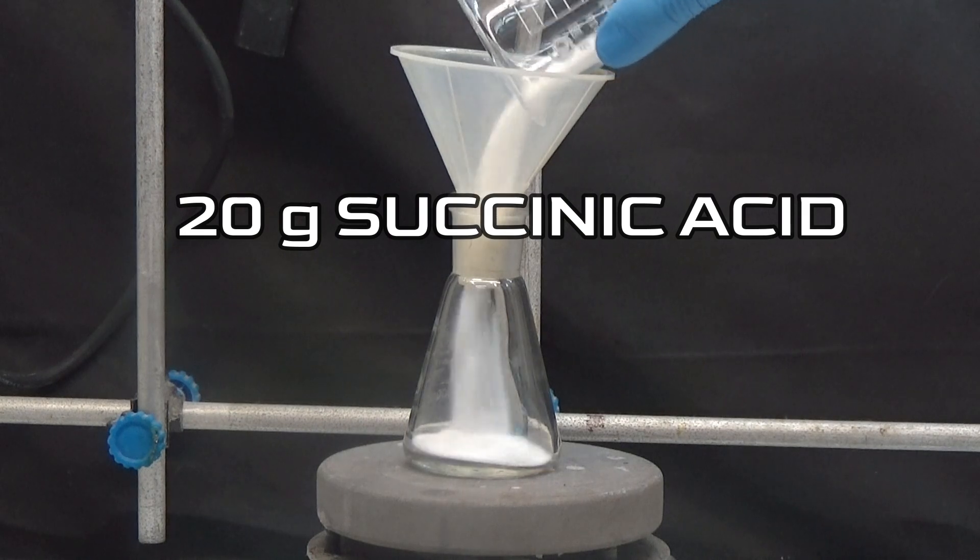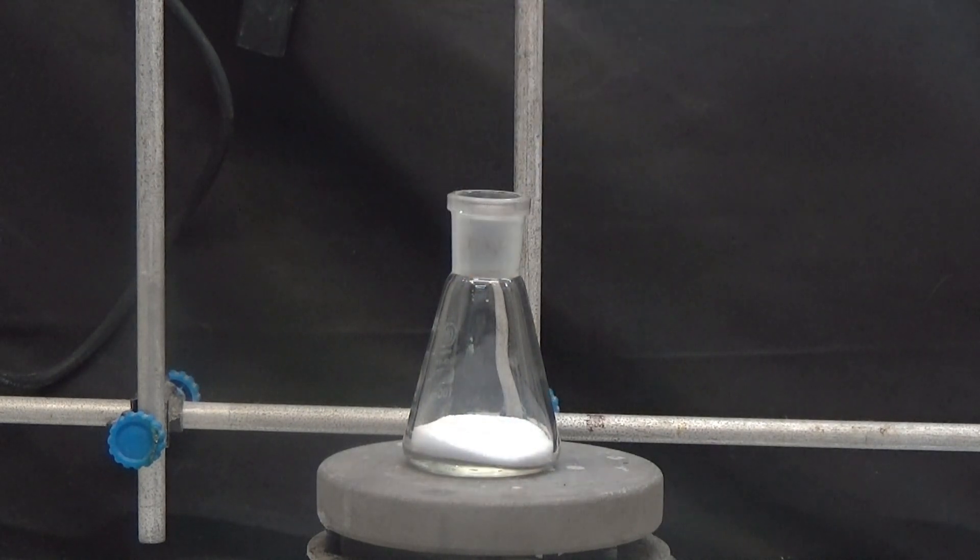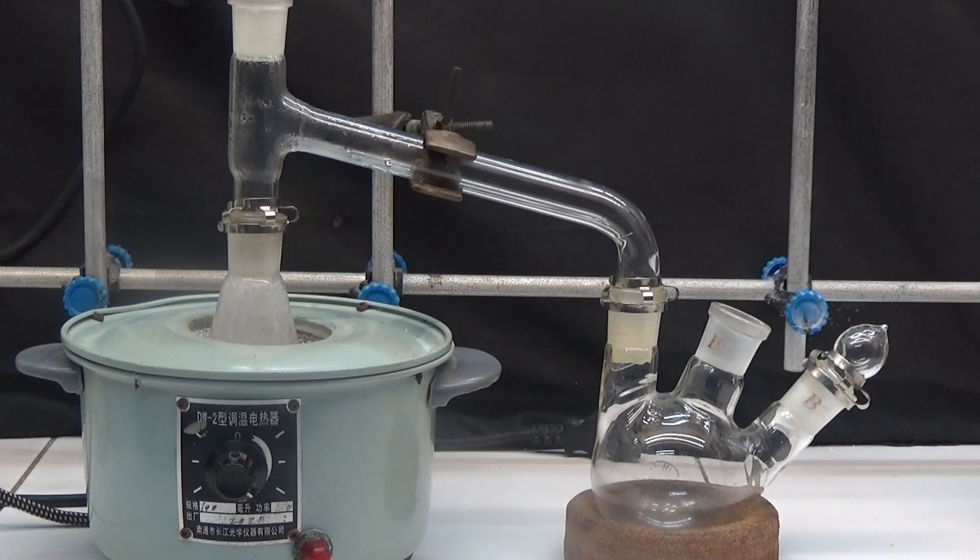In the first process, we will add 20 grams of succinic acid to a 100 milliliter flask. The distillation tube, which is 10 to 20 millimeters in diameter, is attached and a flask is used as the receiver.